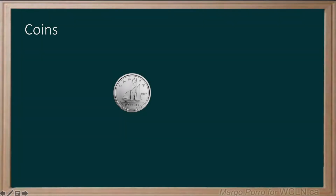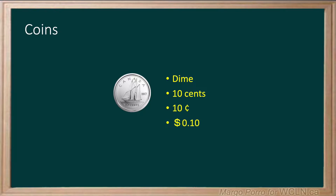The coin with the next smallest value is the dime. It usually has a bluenose picture. This coin has a value of 10 cents. It can be written using the cent sign, or it can be written with the dollar sign.